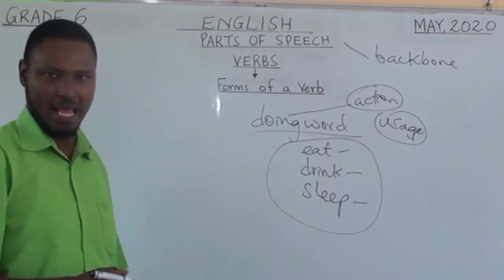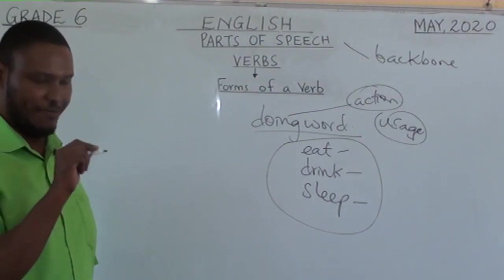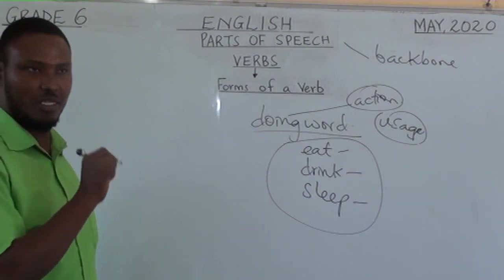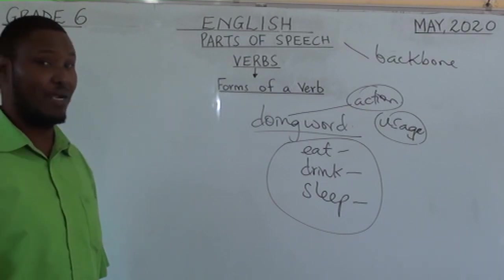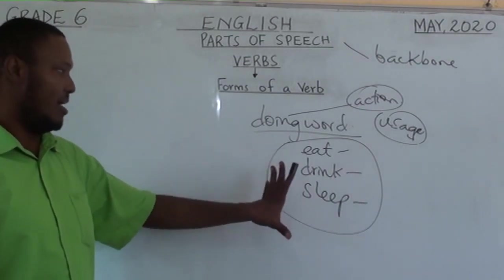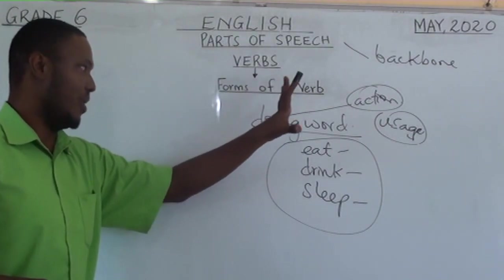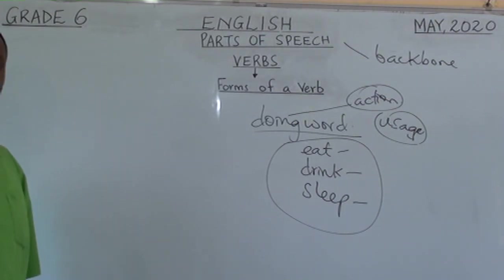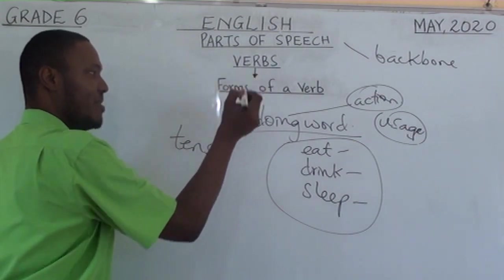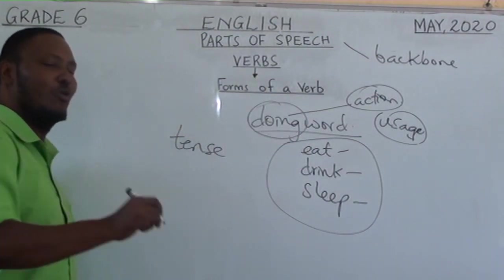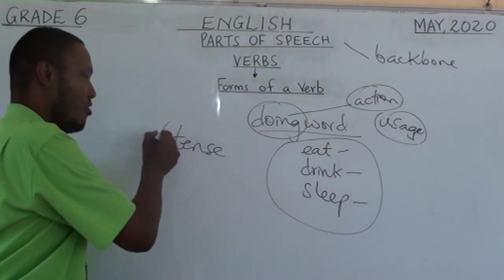There are many, many verbs that you can mention. And because of time, and because it is not the mandate of this lesson to look at all the verbs — it is practically impossible to do that — I leave it at these three. So, a verb is a doing word. When you want to show the time of a certain action, then we talk of tense.